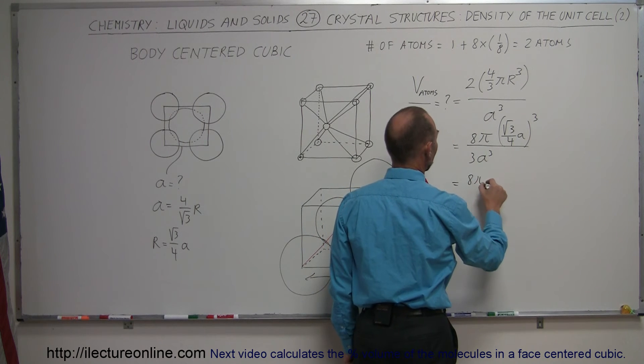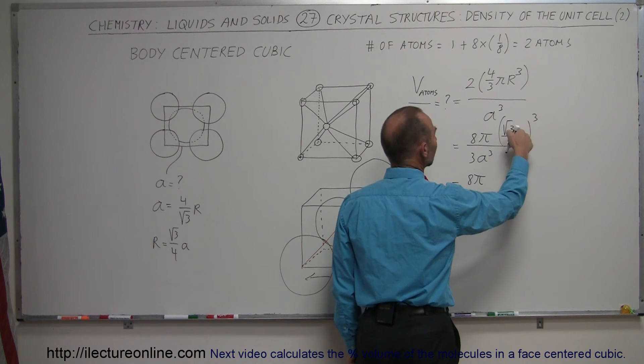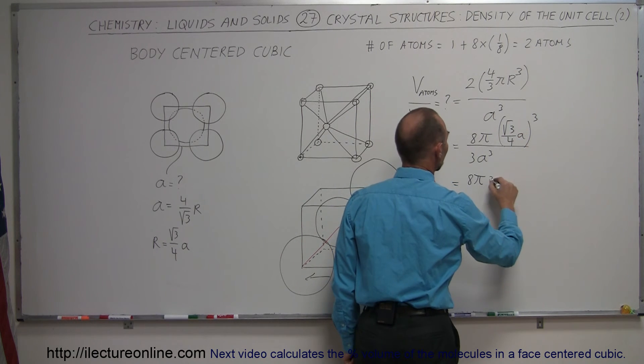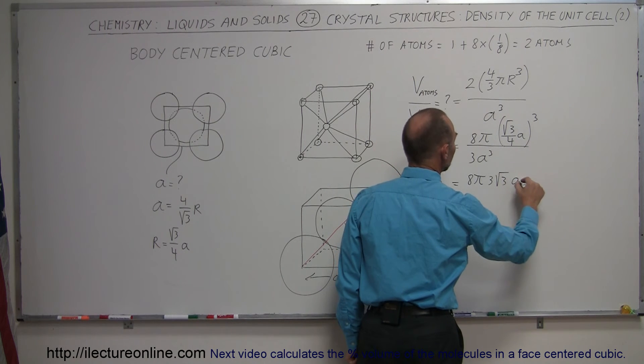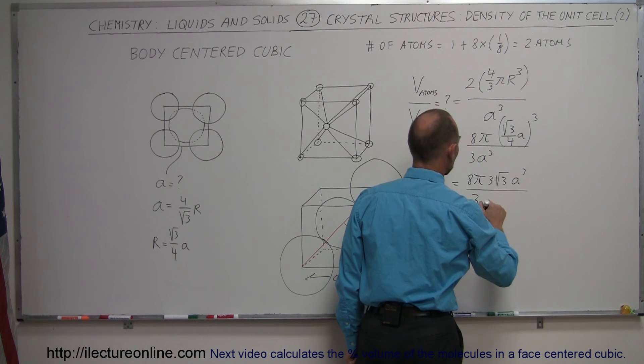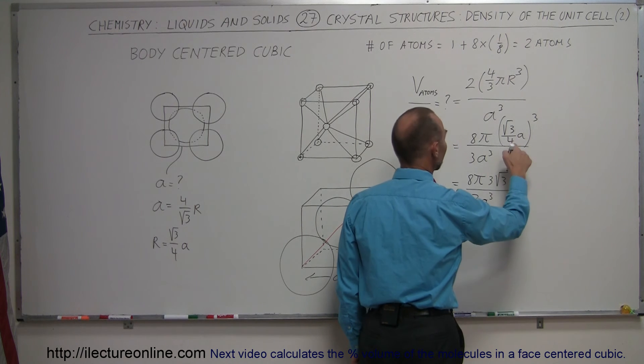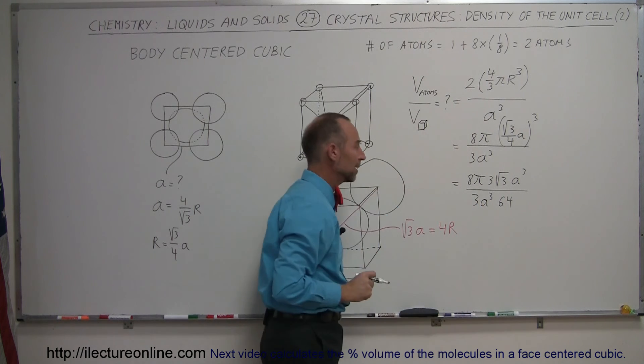Continuing on, we have eight pi, the square root of three cubed, that would be three times the square root of three, times a cubed, divided by three times a cubed. And then we still have the four that's cubed, that would be sixty-four that goes to the denominator.